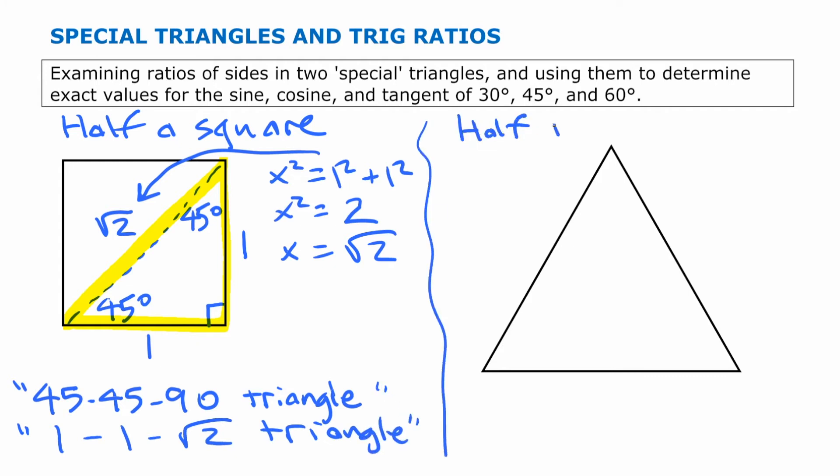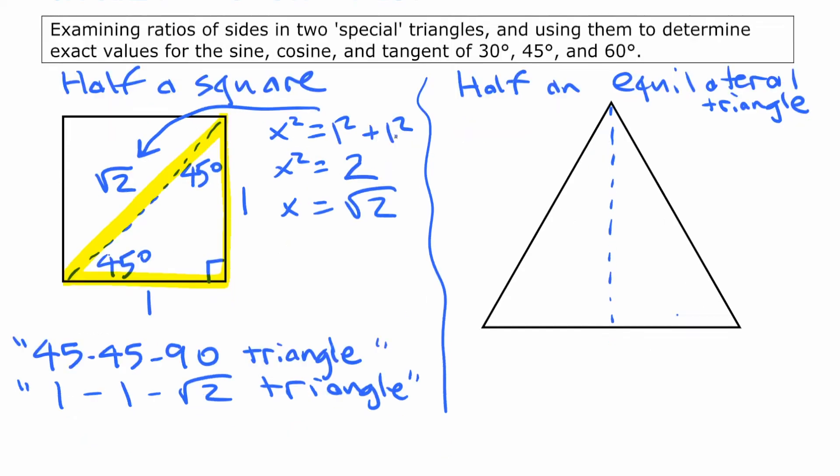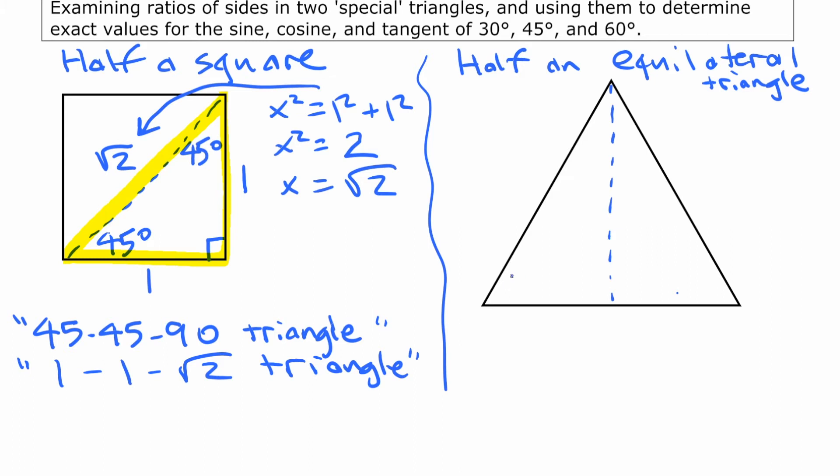The other special triangle comes from half an equilateral triangle cut vertically like that. Now, the angles in an equilateral triangle are 60, and then that's 90, which leaves 30 for that if it's bisected equally. So this triangle here is our other special triangle, and it is called a 30-60-90 triangle because of the angles involved there.